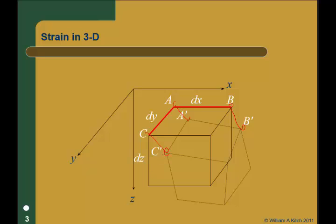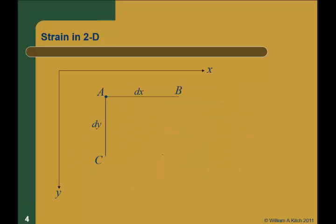What we're going to do now is look at this in two dimensions — just take those two sides of that cube, because that's complicated enough. So this is before deformation. This thing started off with a length dx and it went from A to B, and this started off with length dy and went from A to C. When I apply the stress, A moves somewhere — it follows this vector P. It's going to displace amount U in the x direction and amount V in the y direction.